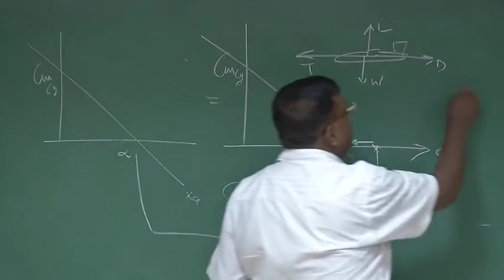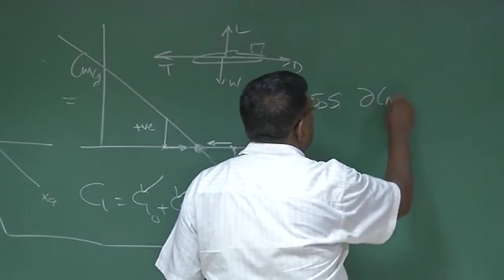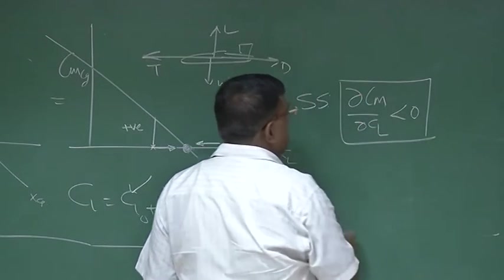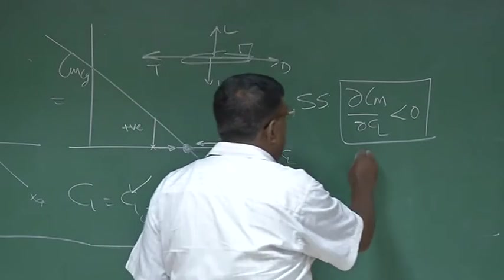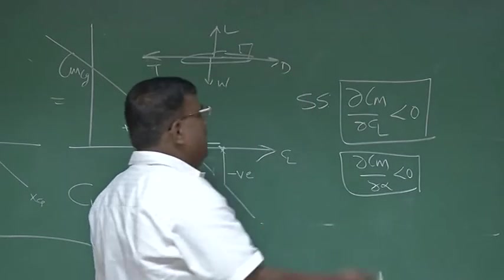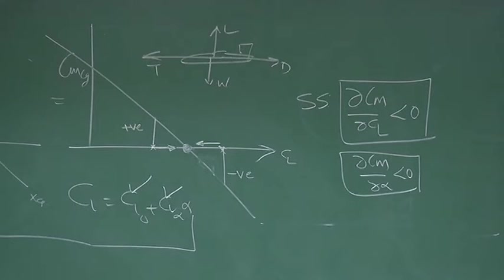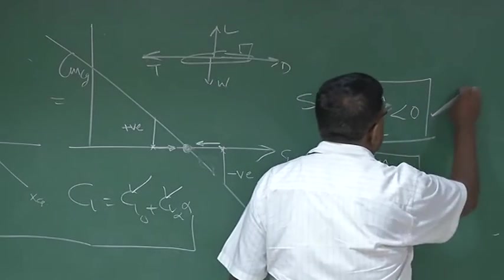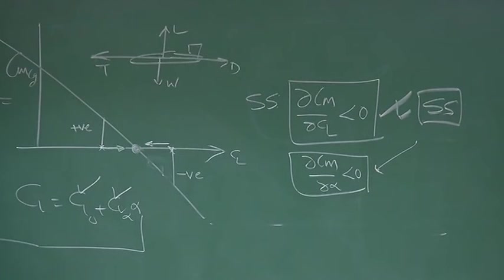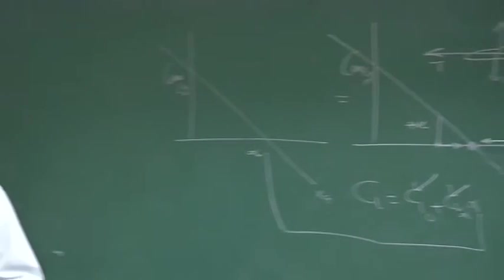So for static stability, dCM/dCL should be less than 0. It is nothing great, because you know that dCM/dα should be less than 0. We have spent a lot of time on that, and alpha and CL are related by this, which means that slope has to be less than 0. We will now use this definition for static stability instead of dCM/dα. You can use both; designers sometimes use dCM/dCL < 0 and sometimes dCM/dα < 0, depending upon the requirement.